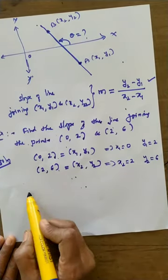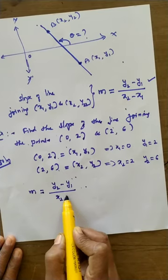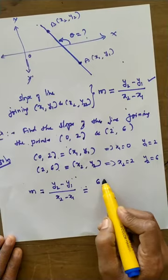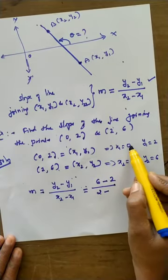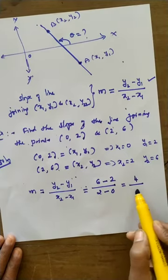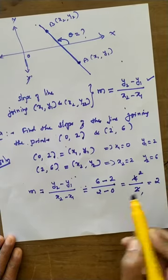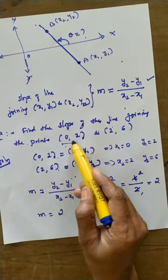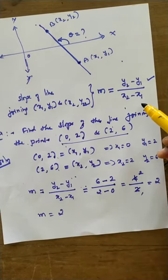Using the formula M = (y2 − y1) / (x2 − x1): M = (6 − 2) / (2 − 0) = 4 / 2 = 2. So the slope of the line joining these two points is 2.